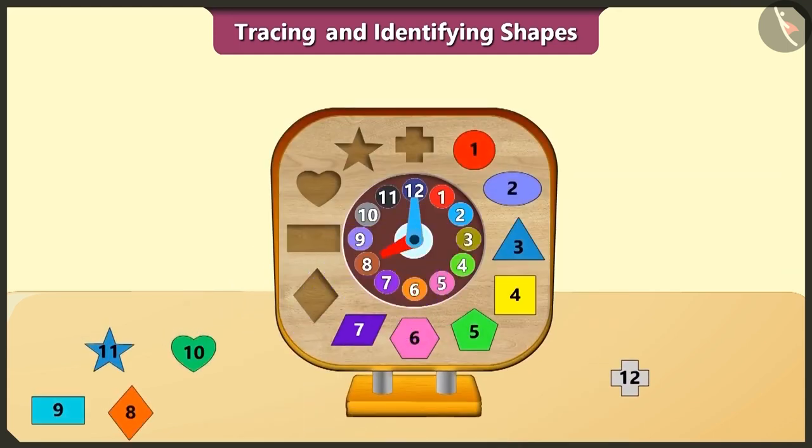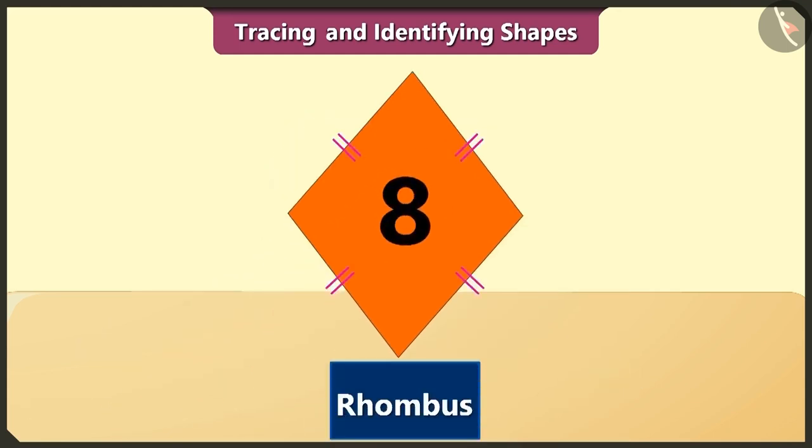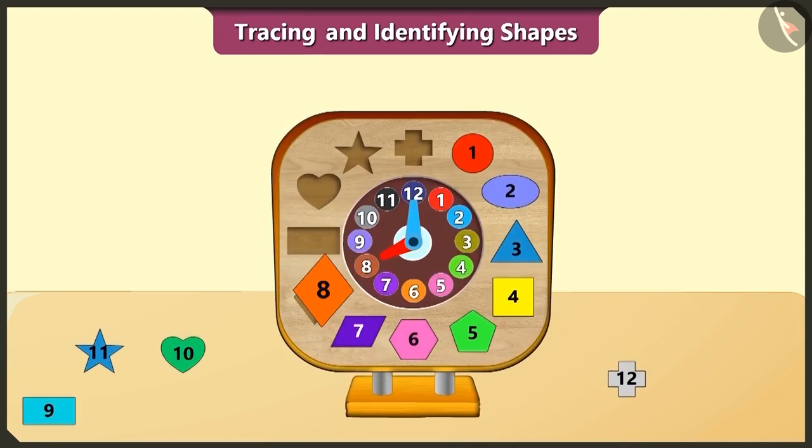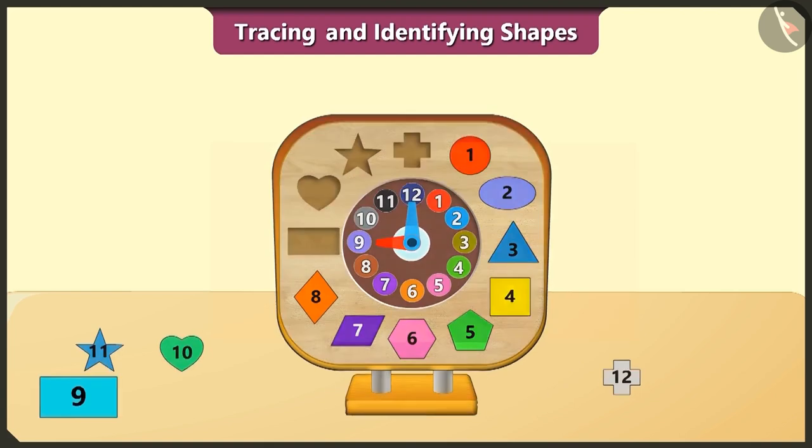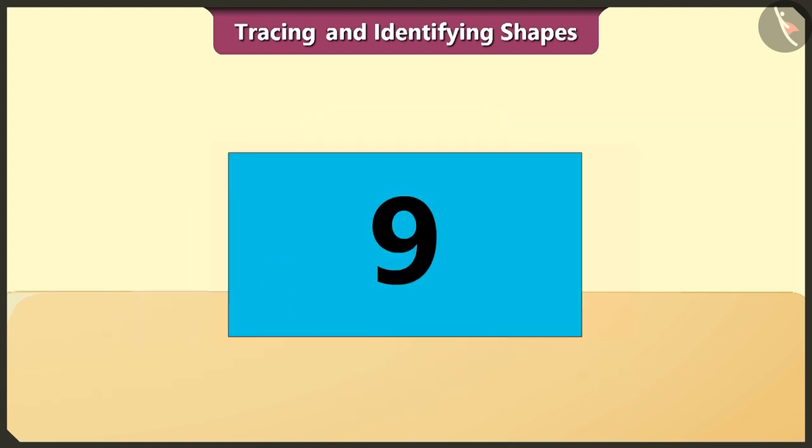The four-sided rhombus is eighth in order. And the rectangle is ninth in order here.